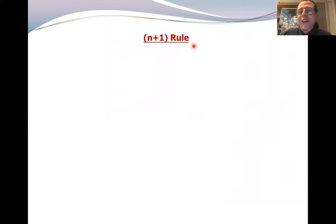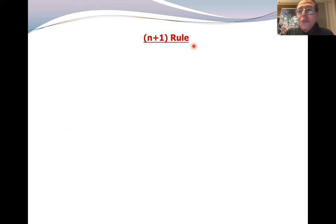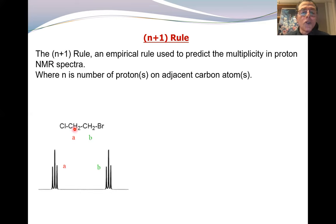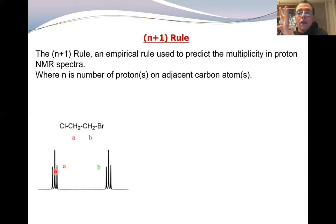Now we go to a very important rule: the N+1 rule. Unlike the chemical shift where we study the group itself, in this case we study the adjacent group. Applying the rule gives you an idea of what the adjacent protons are — what protons are on the neighboring carbon. N is the number of protons on the adjacent carbon atoms. For example, looking at a CH2 group: from one side there are two protons, so two plus one equals three — the peak will show three lines (a triplet). Applying this to another proton with two adjacent protons also gives three lines.